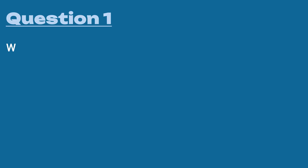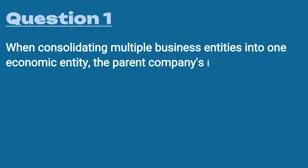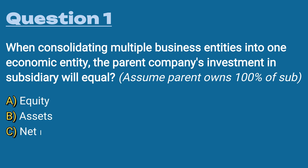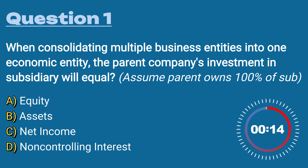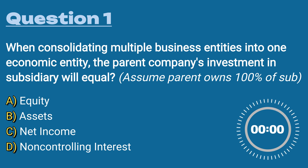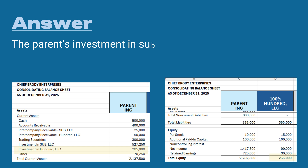Question number one: when consolidating multiple business entities into one economic entity, the parent company's investment in subsidiary will equal — assuming the parent owns 100% of the sub — A) equity, B) assets, C) net income, or D) non-controlling interest. The answer is A) equity. The parent's investment in subsidiary should equal the subsidiary's equity.